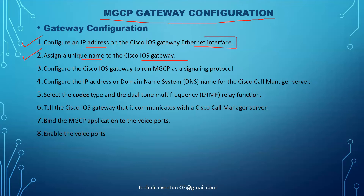The step two would be to assign a unique name to the Cisco IOS gateway. You need to assign a unique name — that will be your hostname — and that hostname should be the same on the MGCP gateway configuration on CUCM. Then the step three would be to configure the iOS gateway to run MGCP as a signaling protocol. You need to run the command 'mgcp' so that your gateway will run MGCP as a signaling protocol.